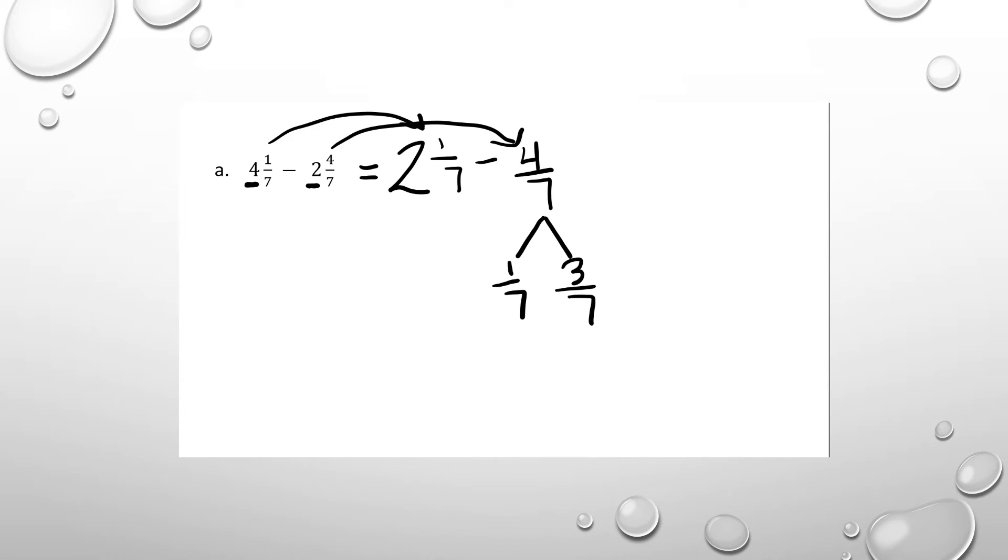So now when I do my subtraction, I can use my arrow method. 2 and 1/7 minus 1/7 equals 2. And now I'm going to subtract the other number in my number bond. I've done 1/7, so now I need to do 3/7. So 2 minus 3/7.